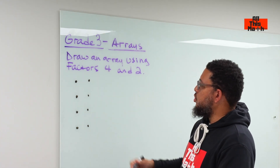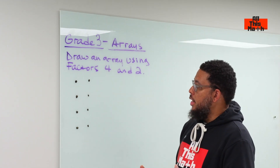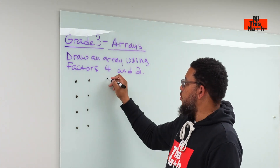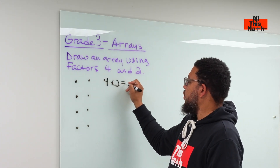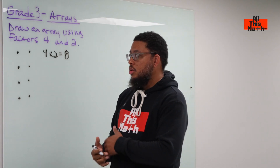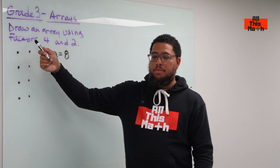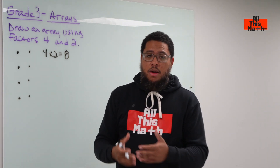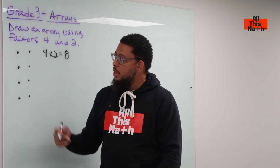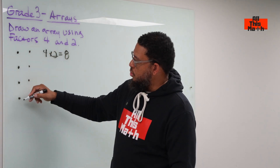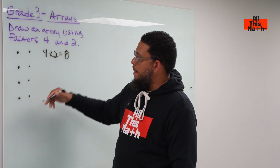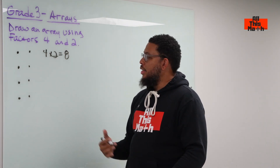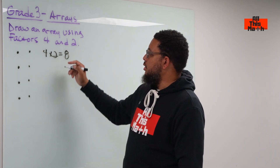So now this is a way to show multiplication visually. We can say we have four two times, or four times two, which we may know from memory is eight, or we can just count up all the dots and be reminded of the fact that multiplication is just repeated addition anyway. So we count one, two, three, four, five, six, seven, eight. Here we've used an array to show and prove that four times two is equal to eight.